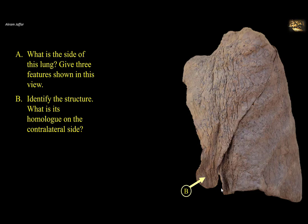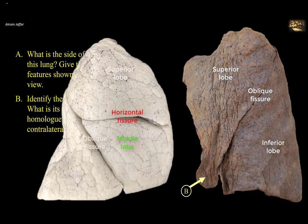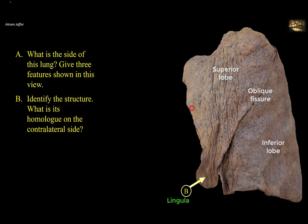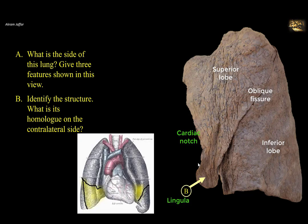Which side of the lung gives the three features shown in this view? Identify the structure and its homologue on the contralateral side. This is the left lung — I can easily tell because it has two lobes and one fissure, the oblique fissure, while the right lung has three lobes and two fissures. There is no horizontal fissure and no middle lobe. Another feature visible is the lingula, a tongue-like process that represents the homologue of the middle lobe of the right lung, belonging to the upper lobe of the left lung. Also on the anterior surface there is a very deep cardiac notch. The presence of the cardiac notch, the lingula, and two lobes with one fissure all confirm this is the left lung. B is the lingula, and it is the homologue of the middle lobe of the right lung.